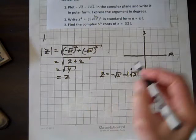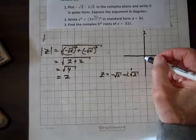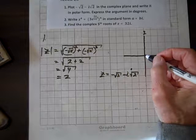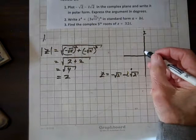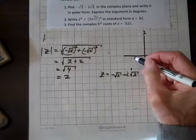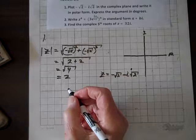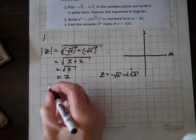And now we have to find the argument. Well, the reference angle is 45 degrees, and so we're in the third quadrant, so that's going to give us an angle of 225 degrees. So our argument is 225 degrees.